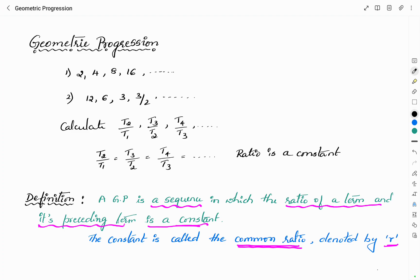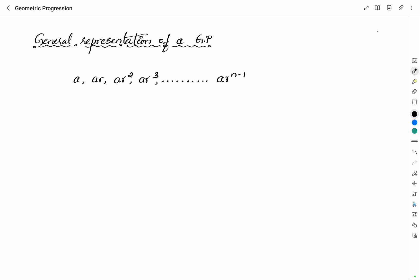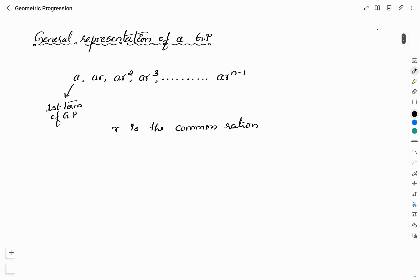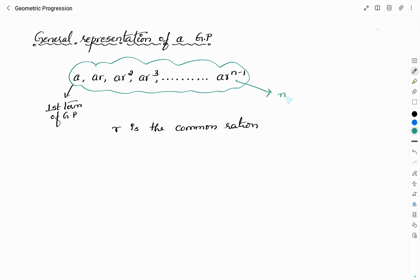Now, let us see the general representation of a geometric progression. A geometric progression is generally represented as A, AR, AR², AR³ and so on, up to AR^(N−1). Here, A is the first term of the GP and R is the common ratio. To get the second term, you multiply the first term by the common ratio, and the nth term of the GP is A·R^(N−1).